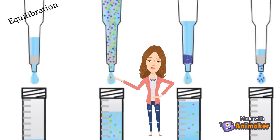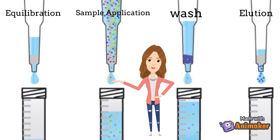The separation of affinity chromatography experiments are carried out in four different stages: equilibration, sample application, wash, and elution.